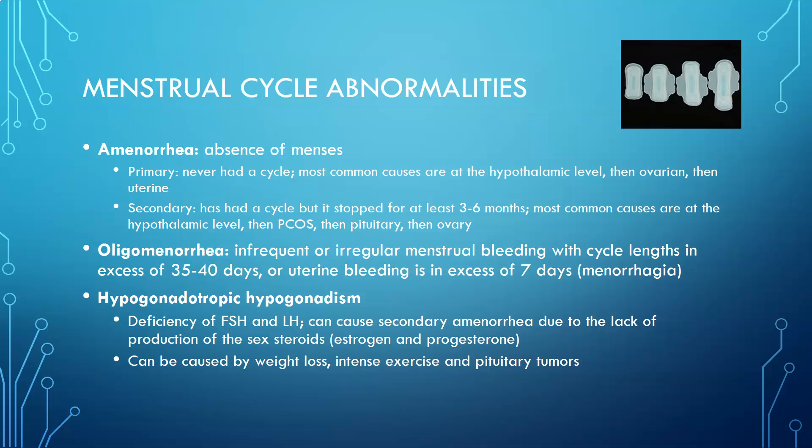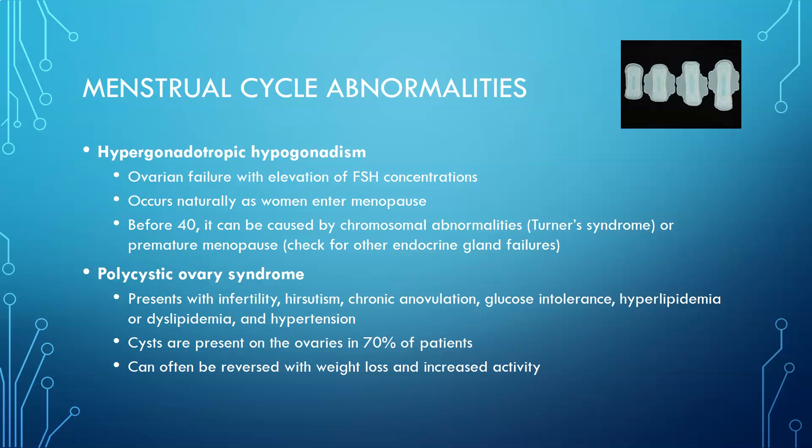Hypogonadotropic hypogonadism can be caused by weight loss — especially intense weight loss — intense exercise, and pituitary tumors. Extreme weight loss signals to the body that there are not enough nutrients to maintain a pregnancy, so it shuts down reproductive function. Excessive or rapid weight loss can thus suppress the hypothalamic-pituitary-gonadal axis.